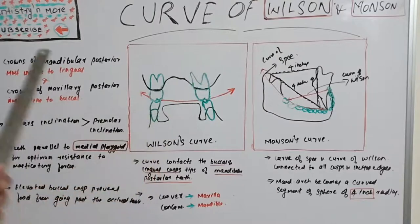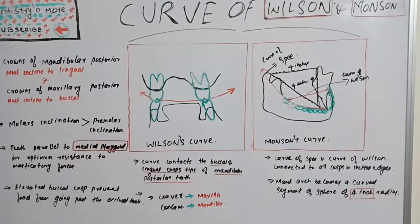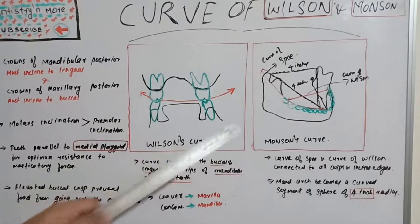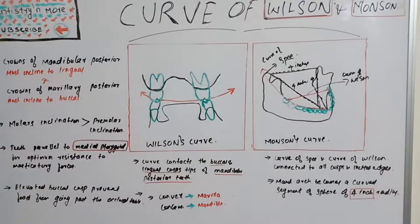Curve of Wilson is a mediolateral curve which touches the buccal and lingual cusps of posterior teeth. Curve of Monson is a compilation of curve of Spee and curve of Wilson which forms a 4-inch equilateral triangle or a sphere with 8-inch diameter with a common point at glabella. All these compensatory curves help us achieve a perfect balanced occlusion. I will come up with a new session on Dentistry and More. Thank you.